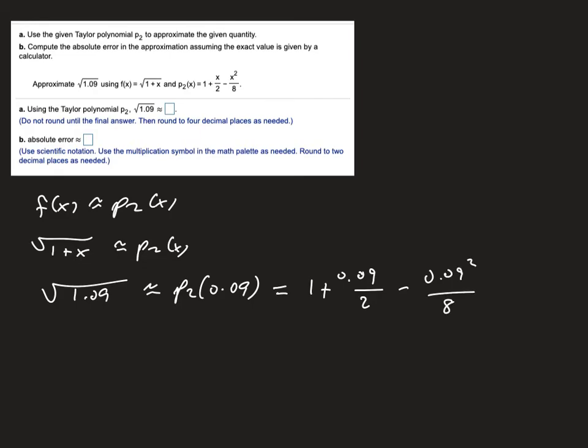p2 of 0.09 is 1 plus 0.09 over 2 minus 0.09 squared over 8. And that is 1.04399. And so to my four decimal places, another one is going to be weird because my fourth decimal place would be right here. So I've got to go 1.0440 would be rounded correctly to four decimal places. So that's what's going to go there.